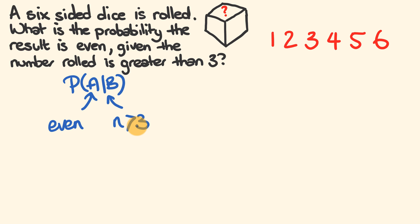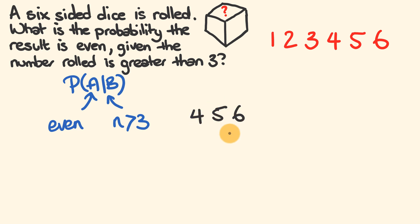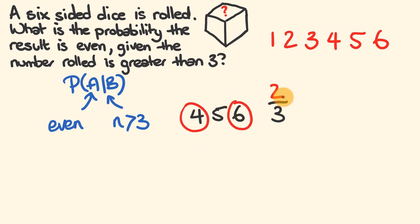We could use logic to solve this fairly simply. Because we know the number rolled is greater than three, we know the values are either going to be a four, a five, or a six — three different outcomes which fulfill this. Of those, how many are even? We could have a four or a six. So we have a two in three probability that the result will be even, given that the number rolled is greater than three. Nice and simple — you could use logic to solve this.